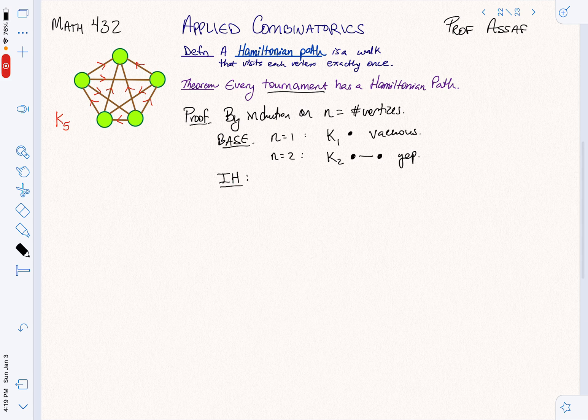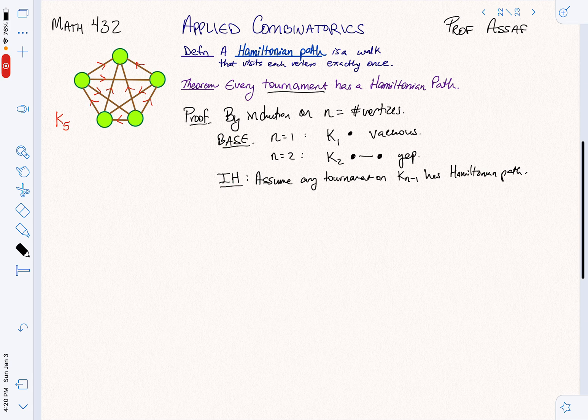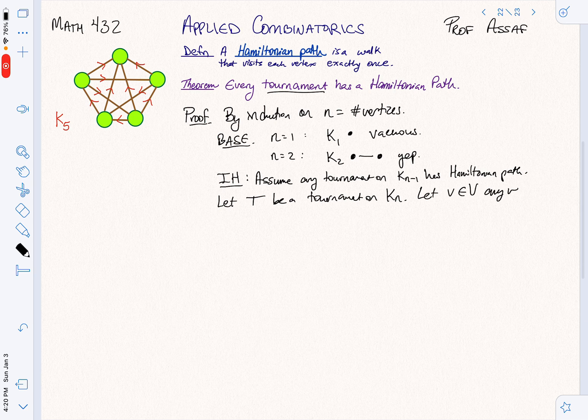We're going to make an inductive hypothesis. We're going to assume that any tournament on KN minus 1 has a Hamiltonian path. That's our inductive hypothesis. Now we're going to let T be a tournament on KN. We need to prove that T has a Hamiltonian path. The first thing to do is knock ourselves down to the inductive case. Let V be any vertex on T.